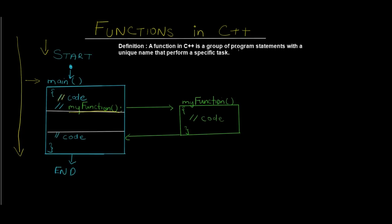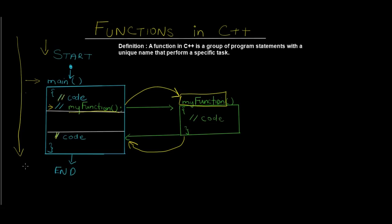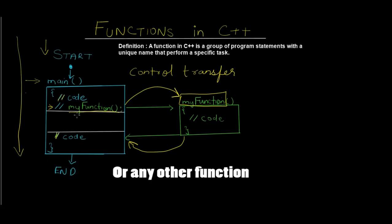According to the definition, a function is a group of program statements. The function name is 'my_function', and it has certain program statements of its own — performing a specific task, such as computing the larger of two numbers. When the program executes line by line and reaches the function call, control is transferred from the main function to the user-defined function. After execution, control is transferred back to the main function, which continues until the program ends. This is known as control transfer.